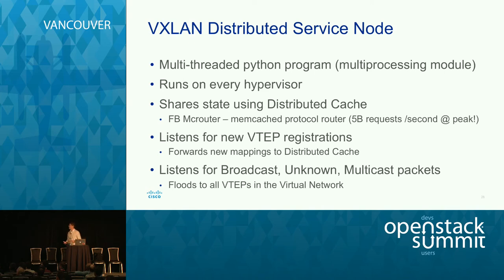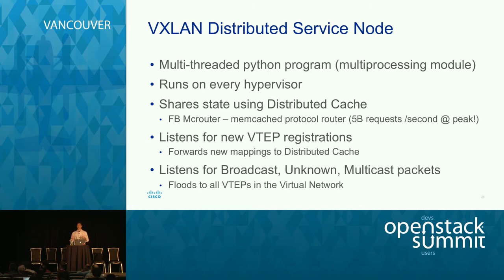The implementation was actually pretty straightforward and didn't take very long. We have a multi-threaded Python program — actually multi-processing, so it scales with the number of CPUs or cores on your boxes. It runs on every hypervisor and shares state using the distributed cache. It does basically two things: first, it listens on localhost for new registrations — any new VTEPs that come up — and updates the distributed cache so all other distributed nodes know about them. Second, it listens for broadcast, unknown, and multicast packets and floods those to all VTEPs in the virtual network.